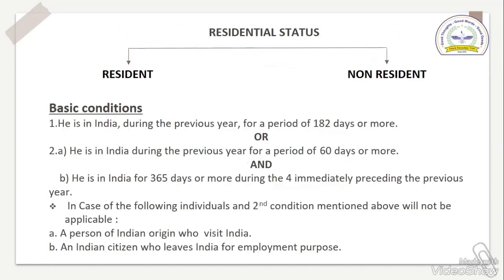Now come to the residential status topic. In residential status, we have two categories: one is resident and second one is non-resident. For becoming a resident, it is necessary to satisfy the basic conditions. Basic condition number one: he is in India during the previous year for a period of 182 days or more. Or, second condition: he is in India during the previous year for a period of 60 days or more, and he is in India for 365 days or more during the four immediately preceding previous years.